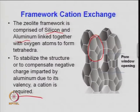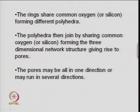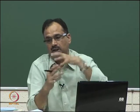This is the pore window opening of the zeolite. Rings share common oxygen or silicon, forming different polyhedra. Depending on the oxygen connected to the ring — 4-, 5-, 6-, 8-, 10-, or 12-membered — different oxygen-membered-ring zeolites are available. The larger the number of rings, the wider the opening. Mordenite, faujasite, and different types of zeolites are available depending on these things.